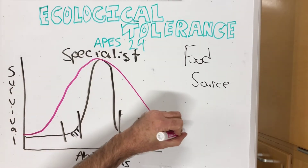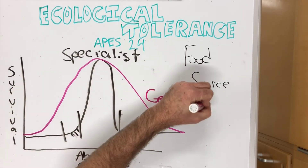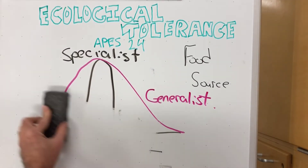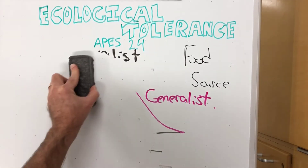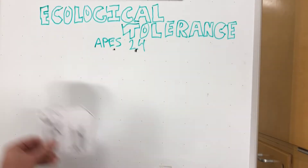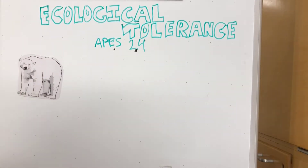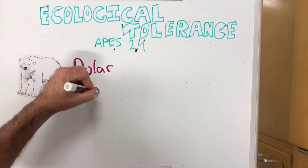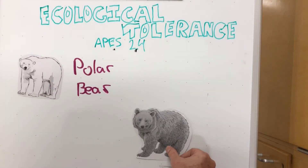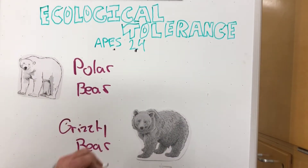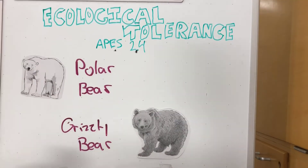If a species has a wide range of tolerance, we call that species a generalist. With relation to food sources, let's see how that plays out with bears in the Arctic. Most of you are familiar with the polar bear, and also with the grizzly bear. The largest grizzly bears are known as the Kodiak bear.